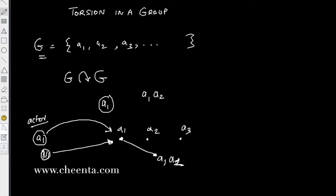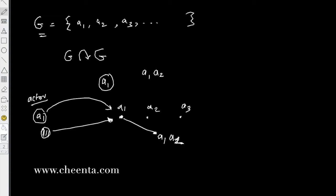It will be a bit clearer if I change the actor and the acted upon elements. Suppose a1 is acting on a2. So this striker will hit this point a2, and it will go to another point a1 times a2.